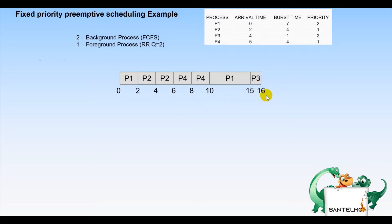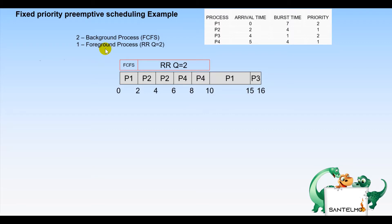P1 was executed using first come first serve but was preempted when a higher priority process arrived — that's why this is a preemptive algorithm. P2 and P4 were foreground processes executed with a quantum of two. After all foreground processes completed, execution resumed with background processes using first come first serve.